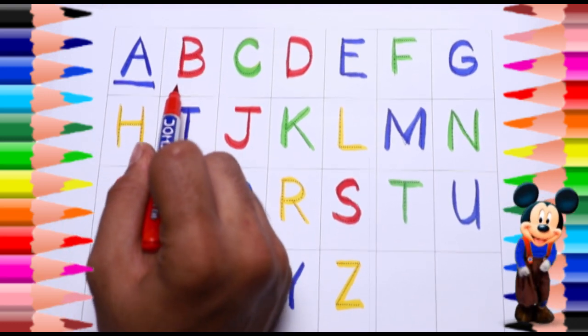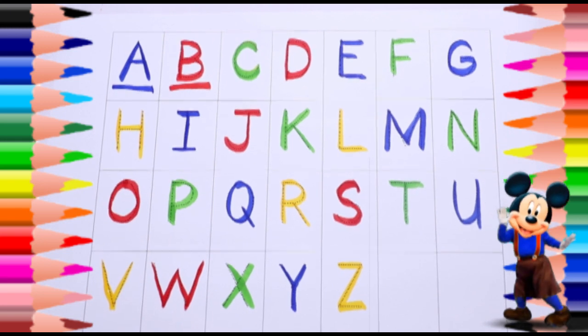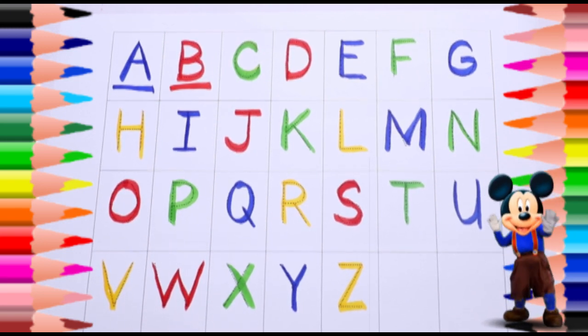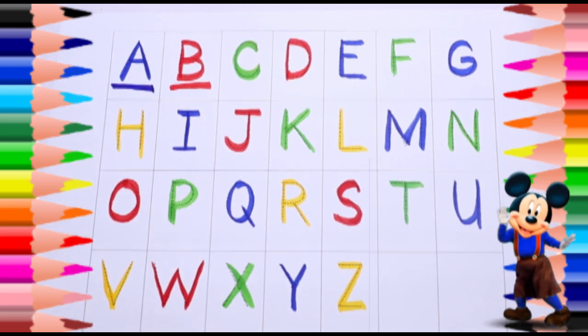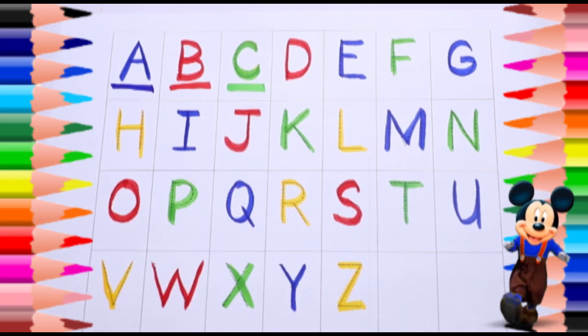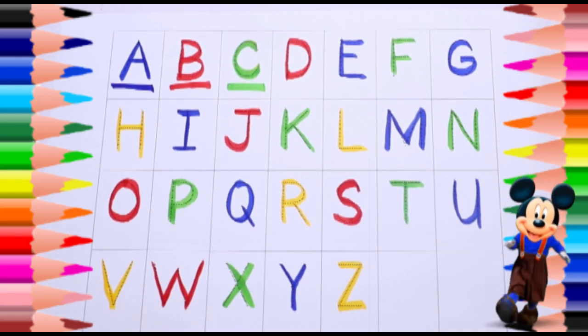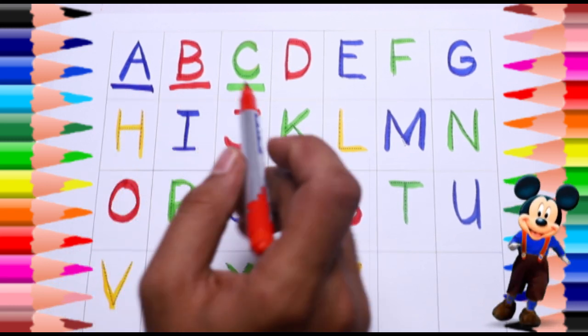B, red color B, B for ball. A for apple. Green color C, C for cat. Red color D, D for dog.